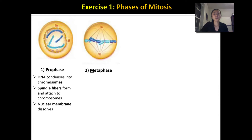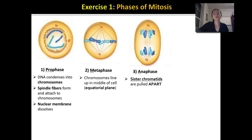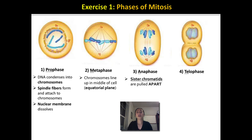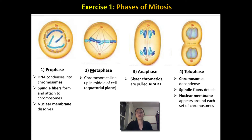Prophase is followed by metaphase — I think of M for middle — when all the chromosomes line up in the middle of the cell. Then comes anaphase — A for away or apart — when the sister chromatids get pulled apart and an equal number of chromosomes move to each side of the cell. During telophase — TE for the end — chromosomes decondense and nuclear membranes reform around each set of chromosomes, resulting in a single cell with two nuclei.